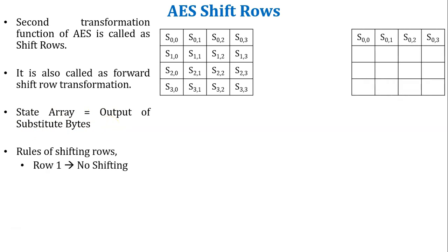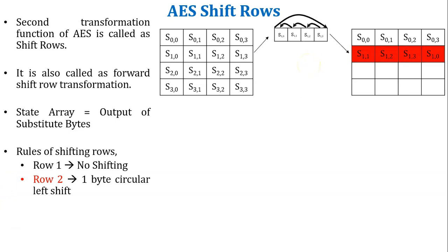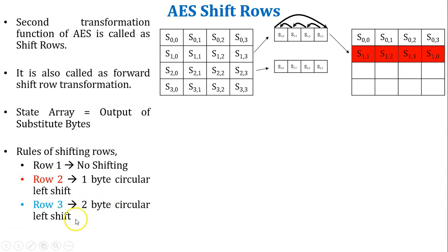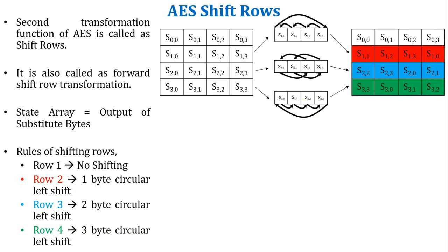Let's discuss the rules of shifting rows. In the state array: row 1 has no shifting, so row 1 remains as it is. Row 2 performs a 1-byte circular left shift. Row 3 performs a 2-byte circular left shift. Row 4 performs a 3-byte circular left shift. These are the rules of the shift row transformation function.